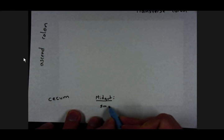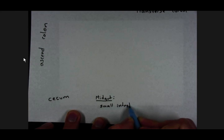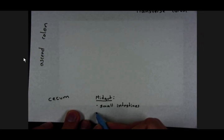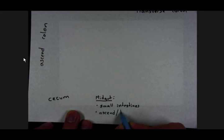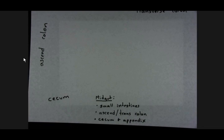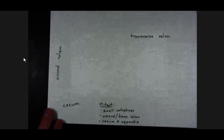Small intestines, as well as ascending and transverse colon. So these mid-gut derived structures will be taken care of by the superior mesenteric artery, which I would like to draw for you now.